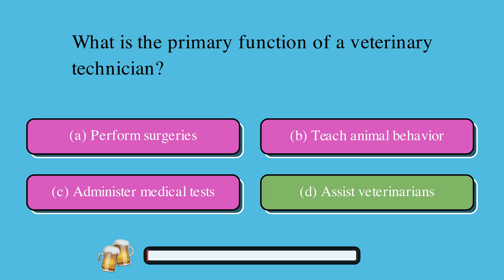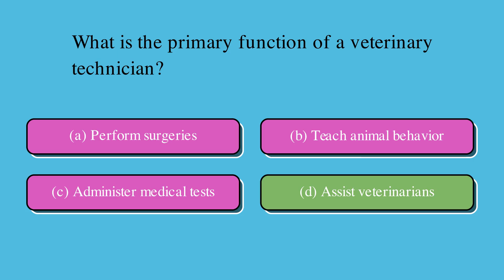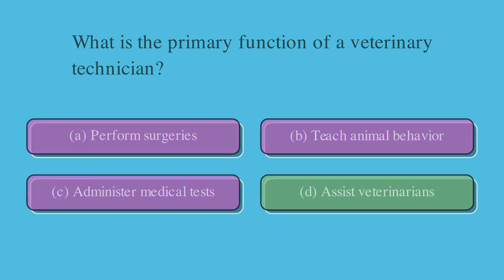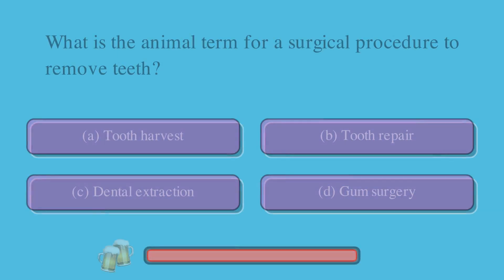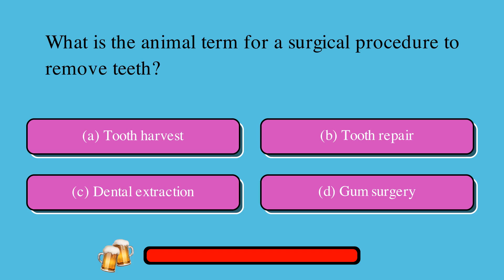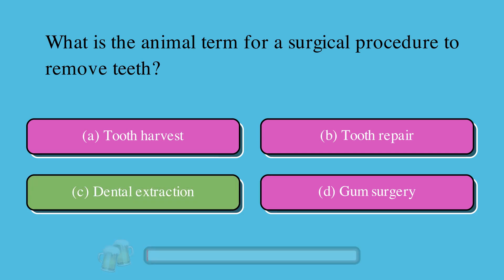What is the animal term for a surgical procedure to remove teeth? A. Tooth harvest, B. Tooth repair, C. Dental extraction, or D. Gum surgery. The correct answer is C. Dental extraction.